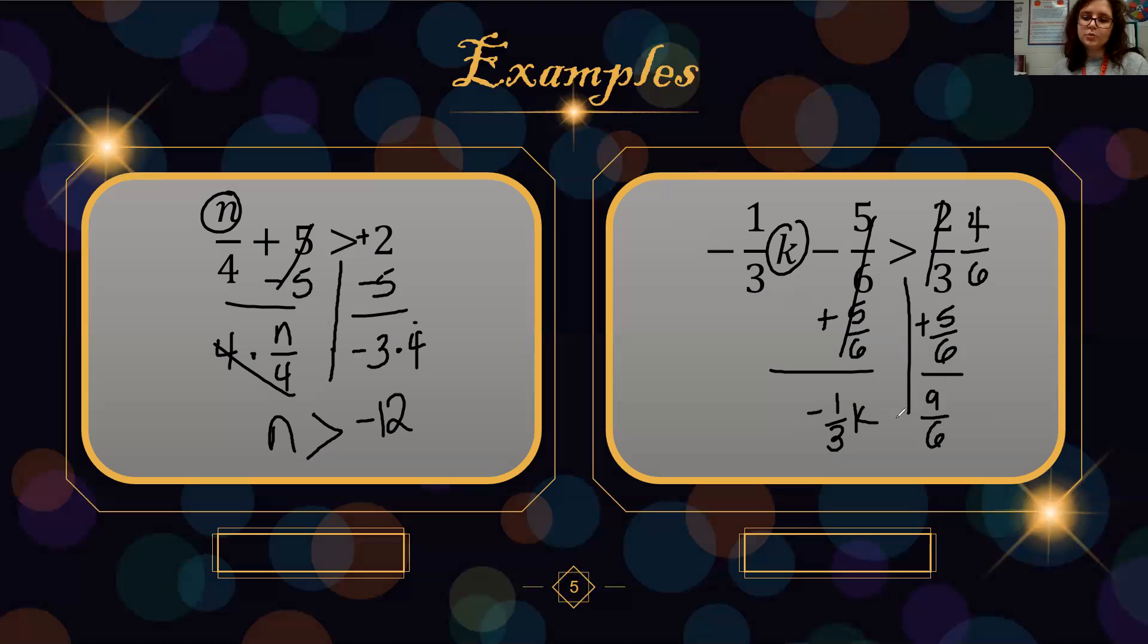Now we undo multiplying by a fraction by multiplying by its reciprocal. We can simplify. 3 and 6 simplify out. 3 divided by 3 is 1. 6 divided by 3 is 2. So we end up with 9 over 2. Positive times a negative is indeed a negative.